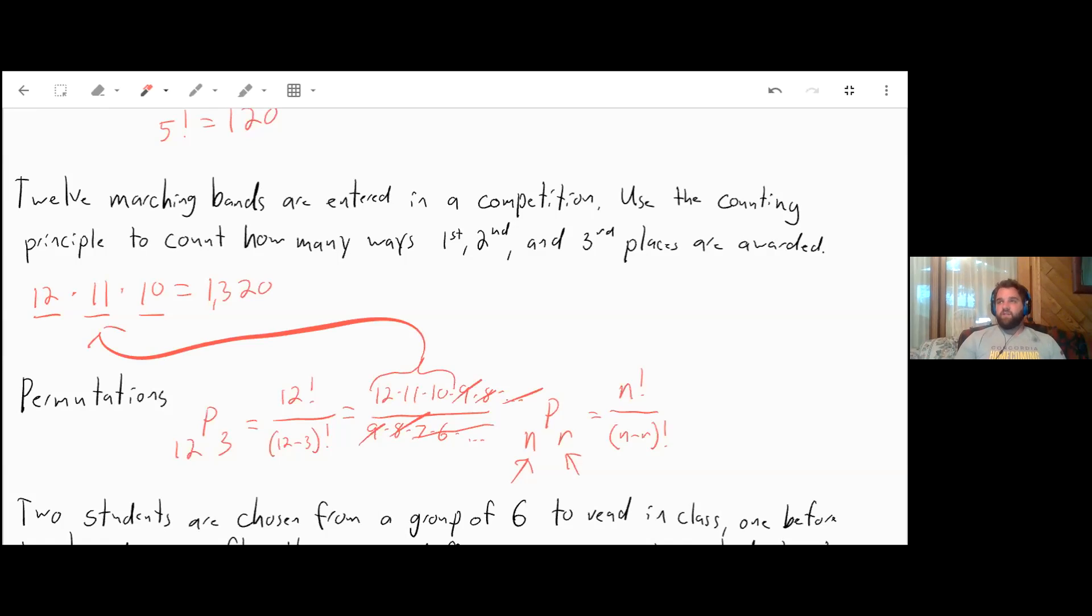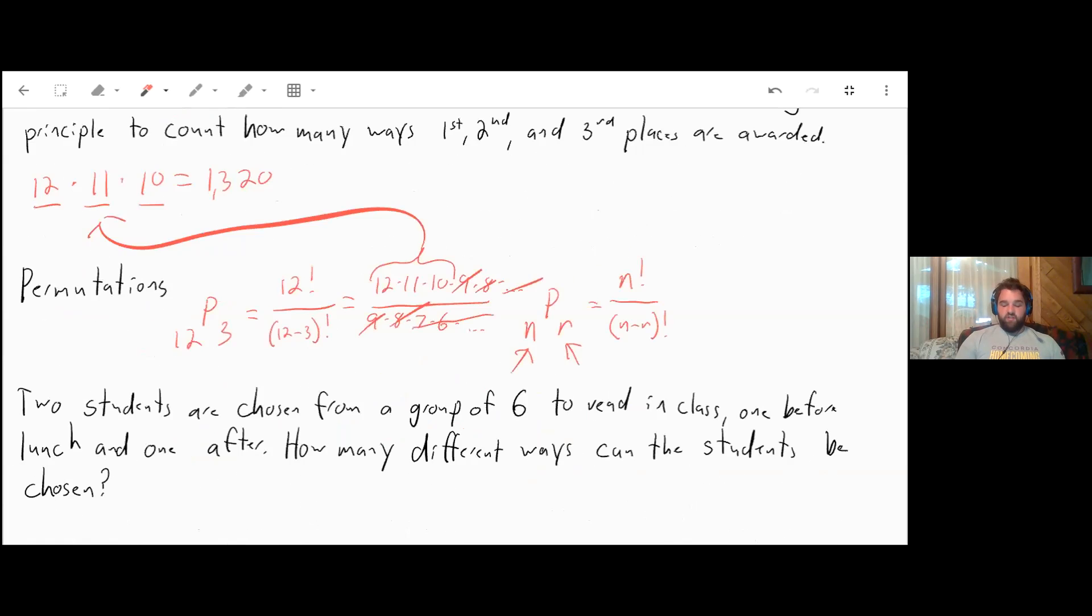Permutations are nice because it lets us actually do more things than having to sit and figure out how to set this up first. You don't have to do the fundamental counting principle as much. You can just use your permutation button.